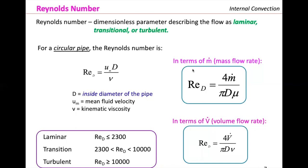I also provide the Reynolds number expressed in terms of mass flow rate and in terms of volumetric flow rate — so if your problem gives you mass flow rate, you can use that form directly to get the Reynolds number. Some textbooks use 2400 as the laminar limit; in this textbook it is 2300. These formulas are for circular pipes only — we are not considering any other geometry here.